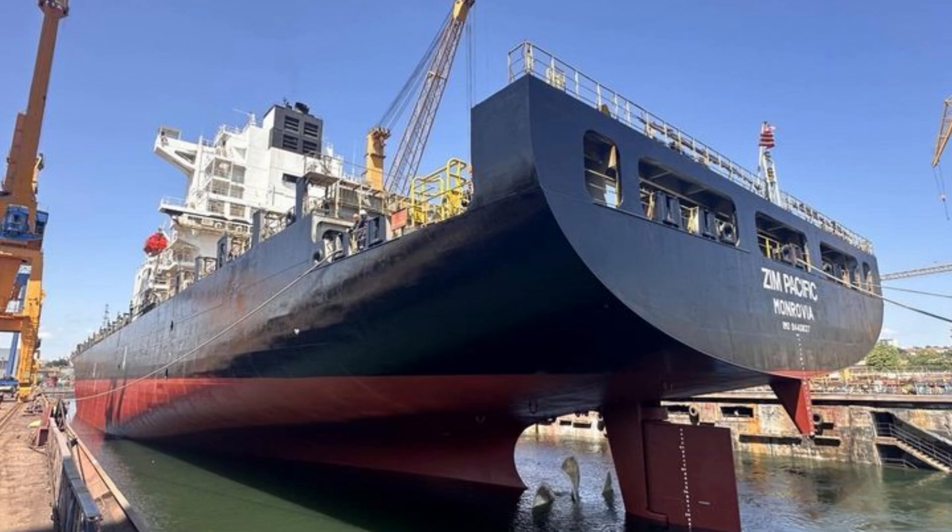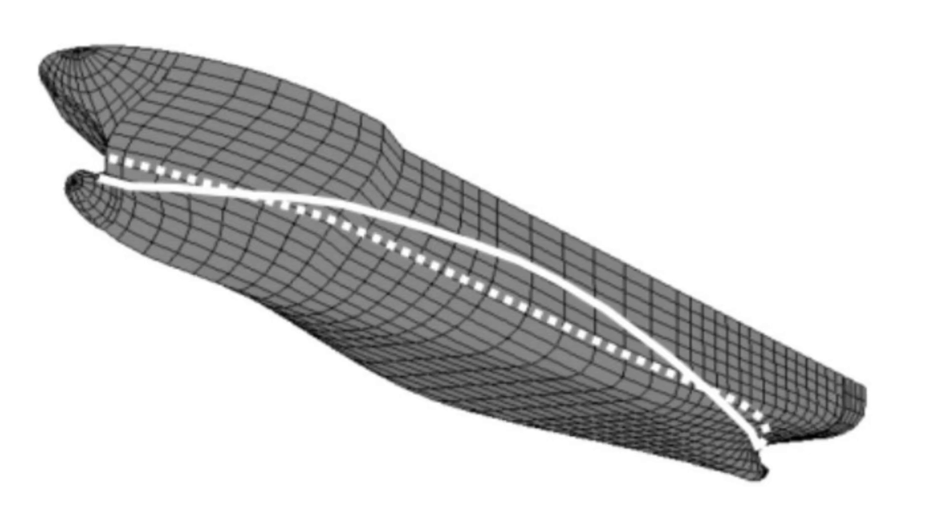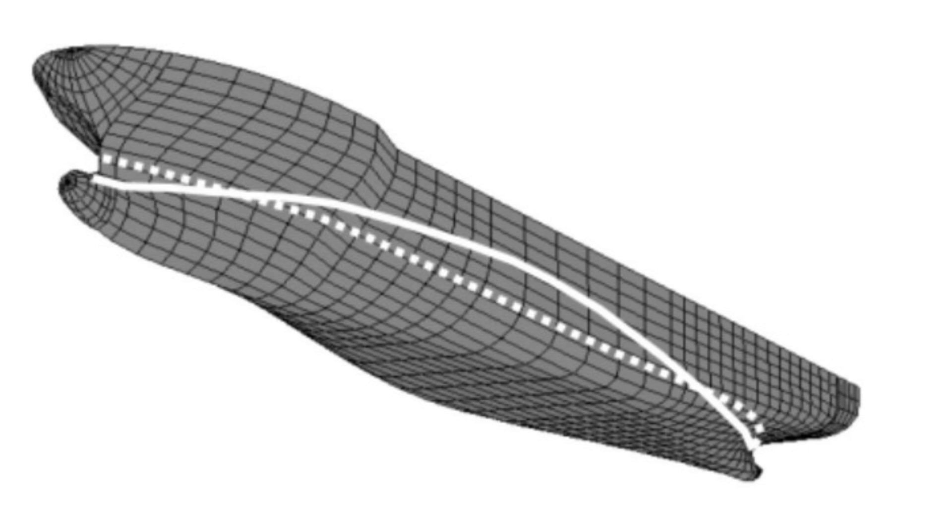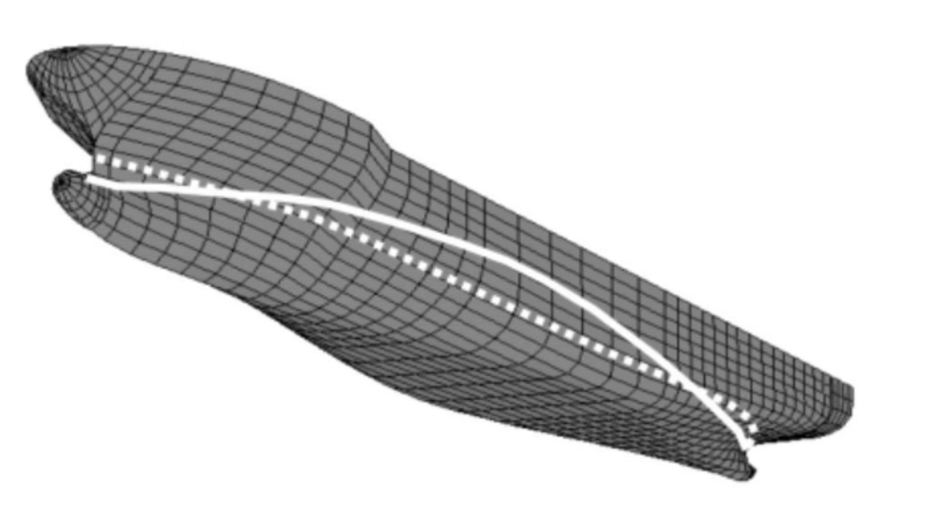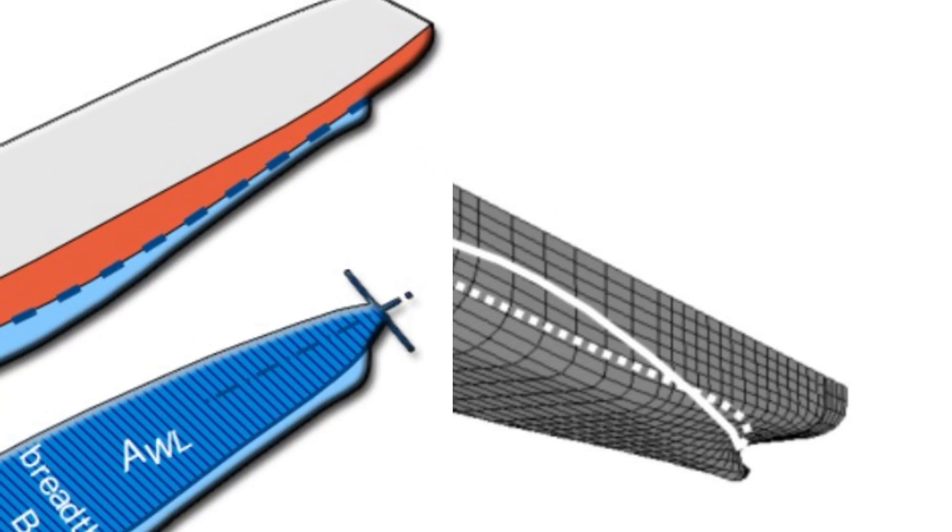The aft section near the waterline is very narrow, primarily designed to ensure sufficient water flow to the propeller for efficient propulsion. When a wave crest is positioned amidships, a second trough forms near the stern. This reduces the draft at the stern, narrowing the water plane in the aft region.